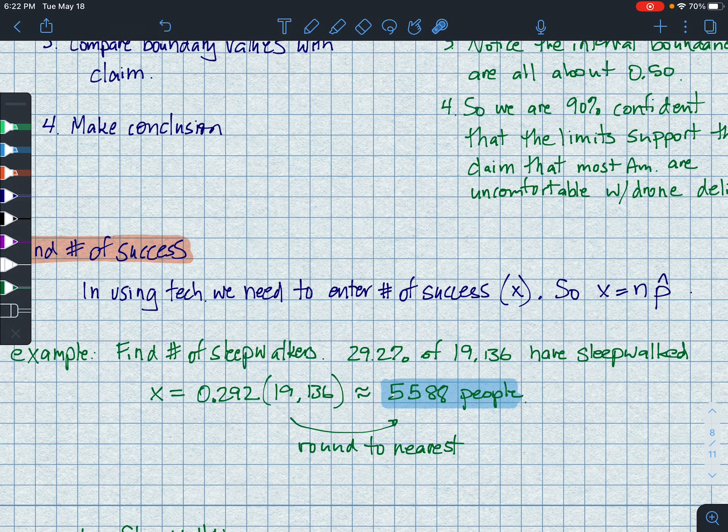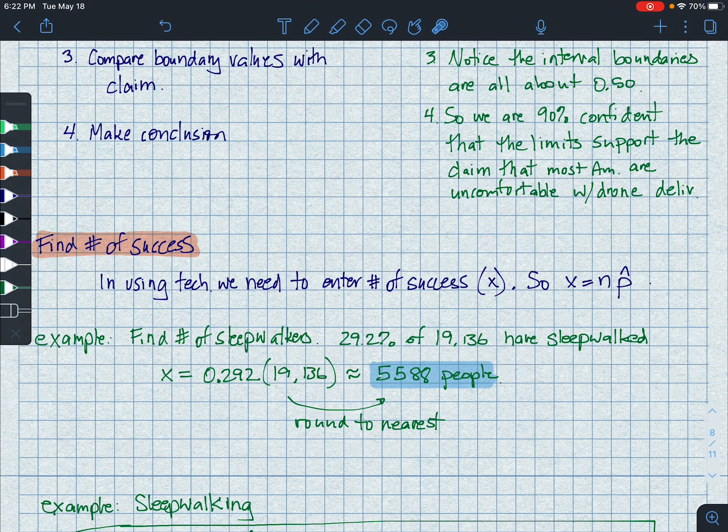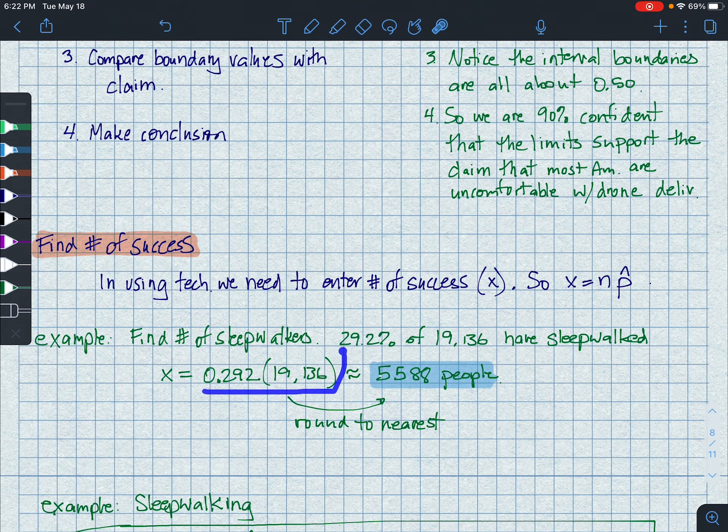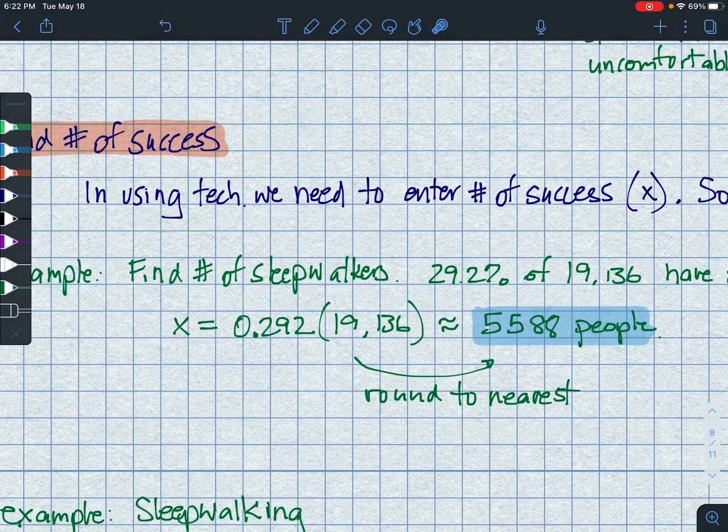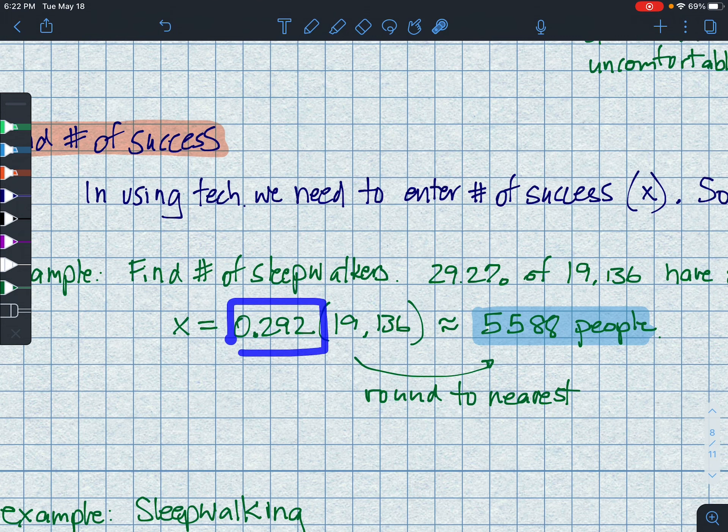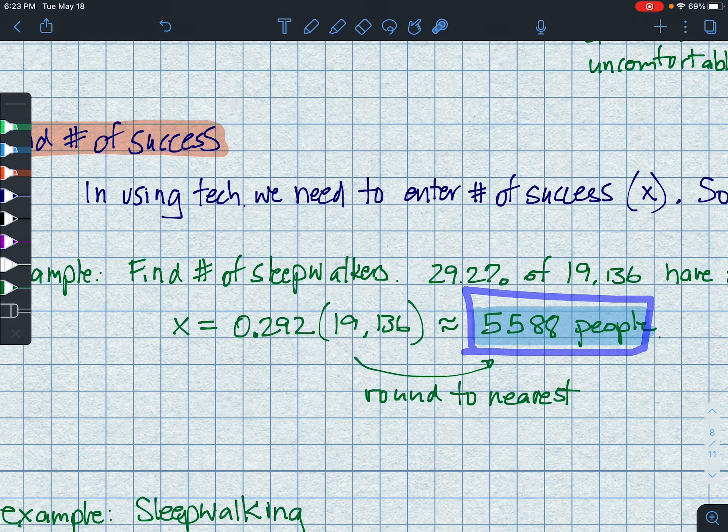Sometimes you need to find the number of successes because of the test that you're doing, right? We need to know X. So in this case, if they tell you how many and what your proportion is, just multiply those two things together. So for example, a sleepwalker problem, which we're going to do in just a moment, has 19,136 individuals. 29 approximate percent of them claim to have sleepwalked previously in their life, which amounts to rounding to the nearest value, 5,588 people.